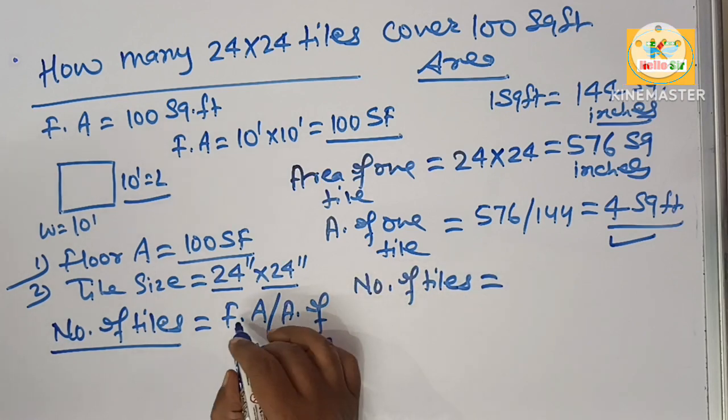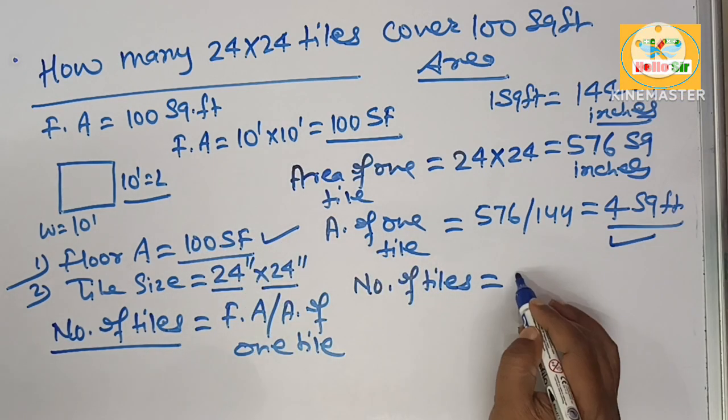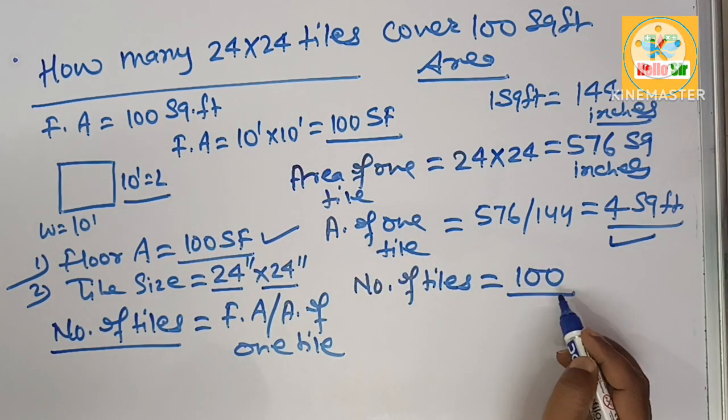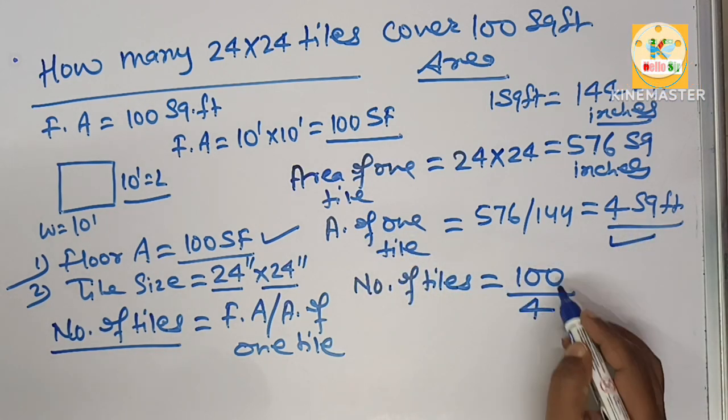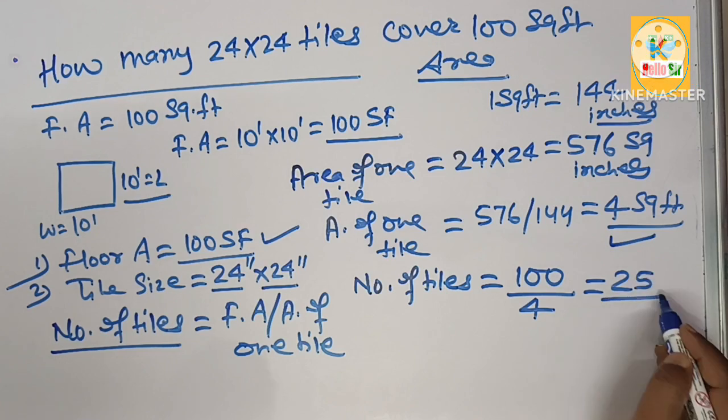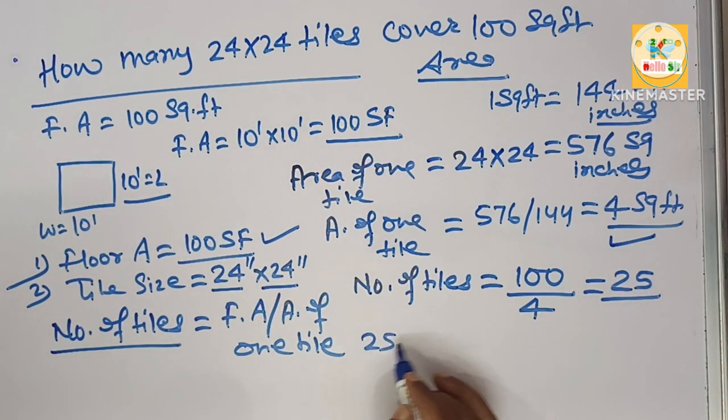Number of tiles is equal to floor area. Your floor area is 100 square foot, 100 is divided by area of one tile that is 4. If you divide this, this will come about 25 tiles. It means 25 tiles of 24 inch by 24 inch required.